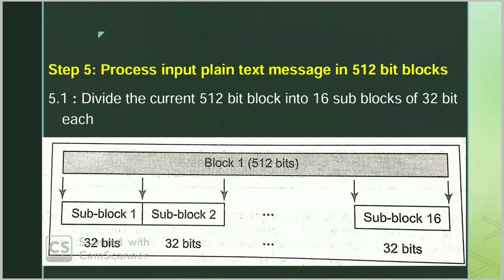In Step 5 we process the input plaintext message in 512-bit blocks. Basically हमने plaintext को 512-bit के blocks में divide कर दिया और 4 chaining variables को initialize कर दिया। Then in Step 5.1 we divide the current 512-bit block into 16 sub-blocks of 32 bits each। हमारे input में padding bits append किए, फिर length append किया, फिर exact multiple of 512-bit के blocks में divide किया। अब हम एक 512-bit block लेंगे और उसे 16 sub-blocks में divide करेंगे, जिनमें प्रत्येक sub-block की length 32 bits होगी।